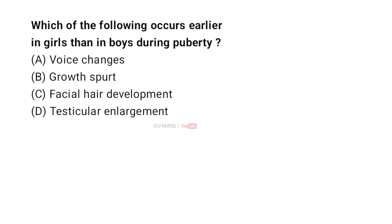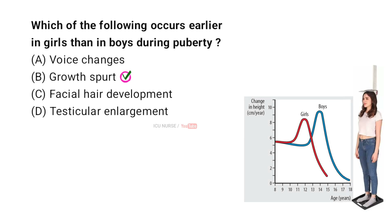Which of the following occurs earlier in girls than in boys during puberty? A: Voice changes, B: Growth spurt, C: Facial hair development, D: Testicular enlargement. The correct answer is B: Growth spurt. Girls typically experience their growth spurt earlier than boys, while boys generally start their growth spurt later.